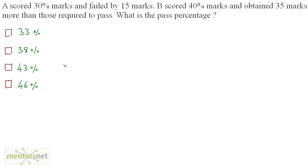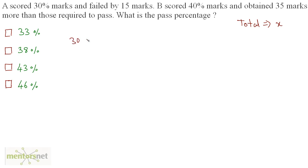A scored 30% marks and failed by 15 marks, while B scored 40% marks and obtained 35 marks more than those required to pass. What is the pass percentage? Let us assume that the total marks be x. A scored 30% of the total marks and failed by 15 marks. To calculate the passing marks, we write it as 30% of x.